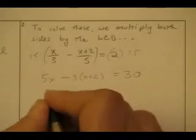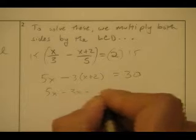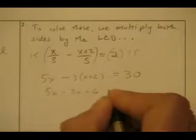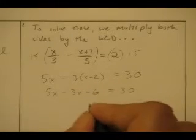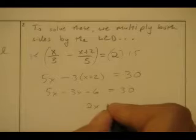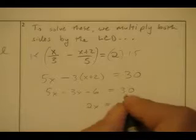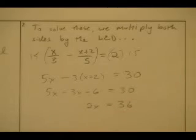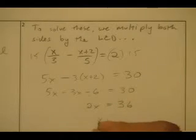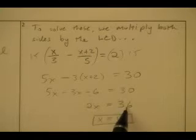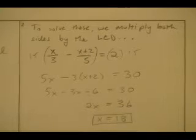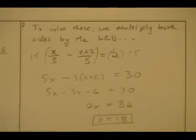2 is 30. So I end up with 5X minus 3X minus 6 equals 30. 5X minus 3X is 2X. Add 6 to both sides. X is 18. 2 eighteens are 36.